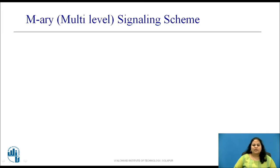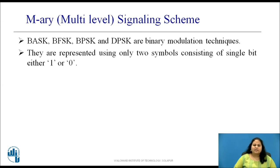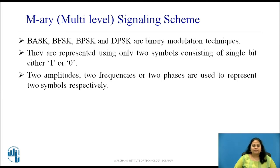Let us now see what is M-Ary signaling scheme. We know that BASK, BFSK, BPSK, and DPSK are binary digital modulation techniques. In all these techniques, the signal is represented using only two symbols consisting of single bit 1 and 0. As only two symbols are used, two amplitudes, two frequencies, or two phases are used to represent them respectively.